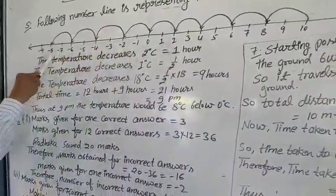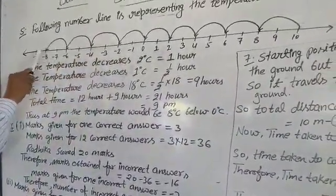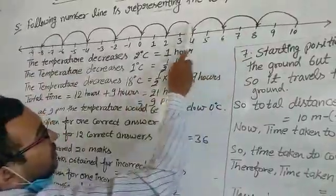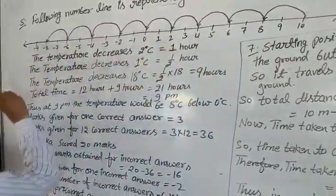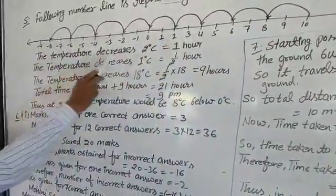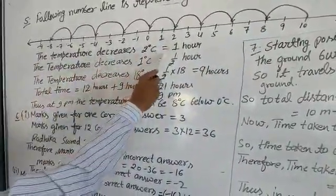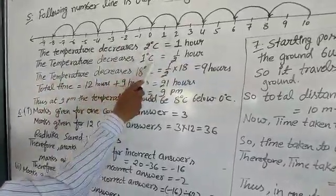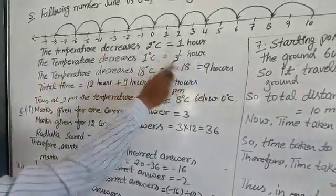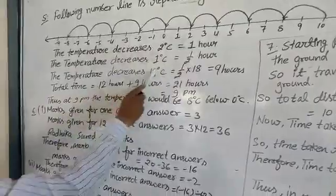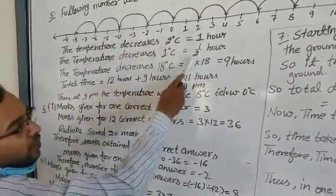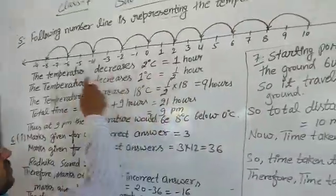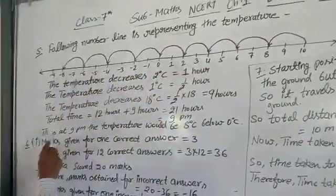Till minus 2 degrees Celsius — that is 9 hours. The temperature decreases 2 degrees Celsius per 1 hour, and 1 degree Celsius per half hour. The temperature decreases 18 degrees Celsius in 1/2 multiplied by 18, which equals 9 hours. So these are 9 hours.